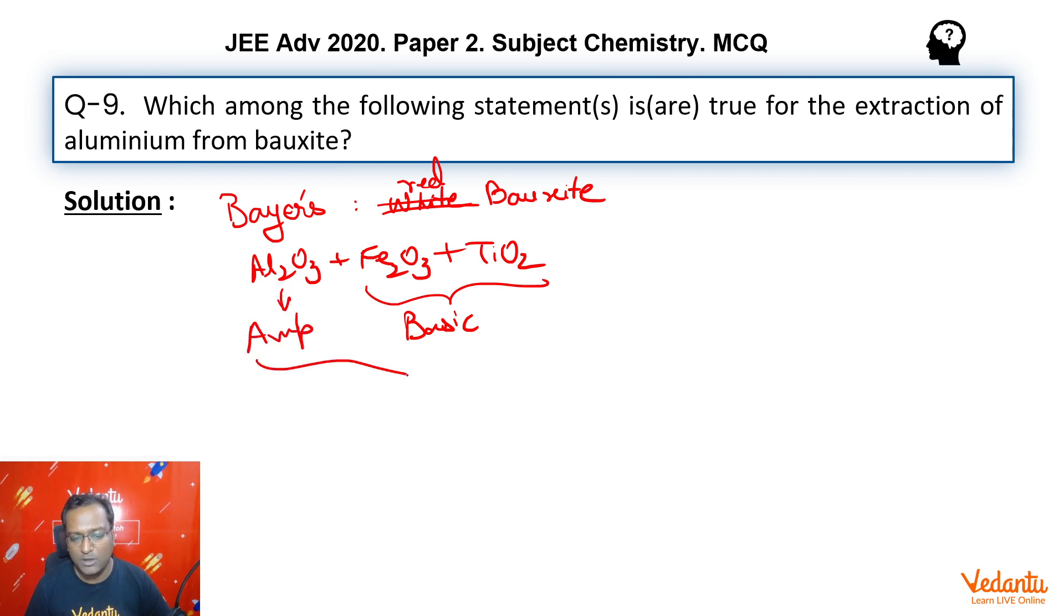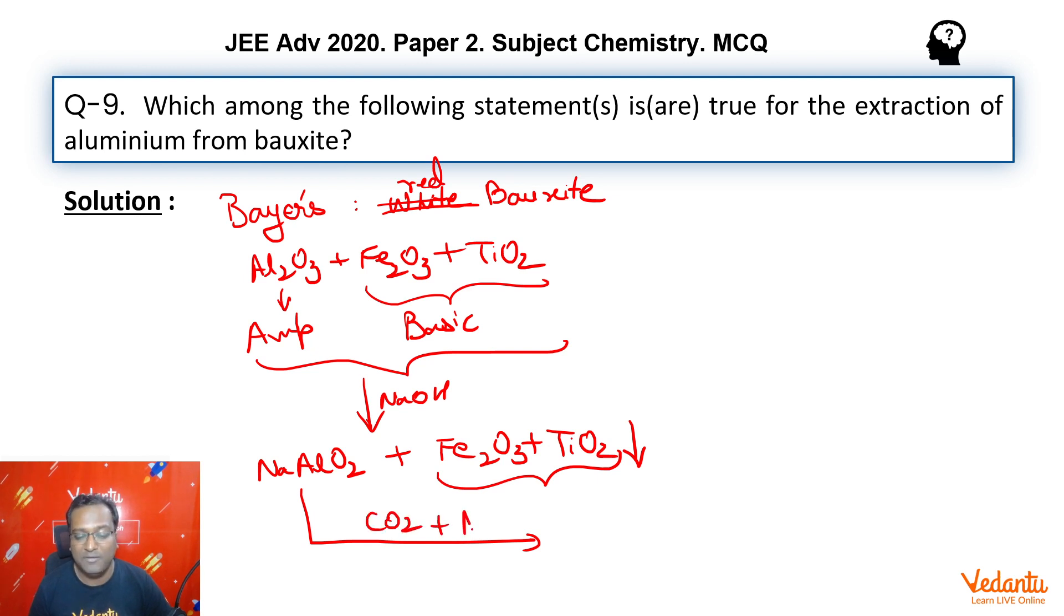What we do is dissolve it in NaOH solution. NaAlO₂, being amphoteric, dissolves forming NaAlO₂, and the rest of the basic impurities remain undissolved - that is Fe₂O₃ and TiO₂. Then we take NaAlO₂, acidify the solution, and add a small bit of Al(OH)₃ as a seeding agent. We then see Al(OH)₃ precipitating away - that is hydrated alumina. This is then separated, dried, heated, and ignited at high temperature to get pure alumina.